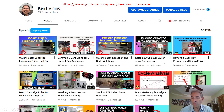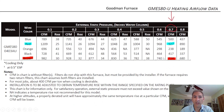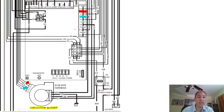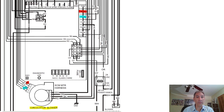You want to know your external static pressure and your CFM so that you know exactly which tap to use. This ensures you set the correct motor speed to achieve the airflow your system needs — whether in a home, a business, or any other application. It's all a system.